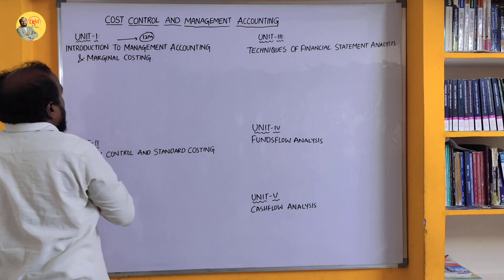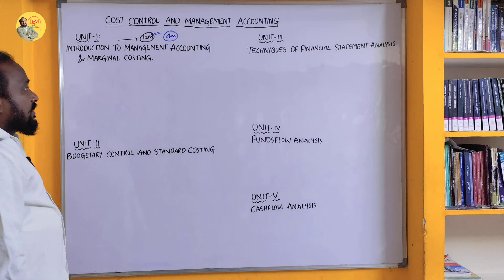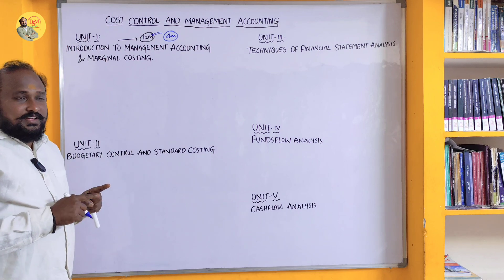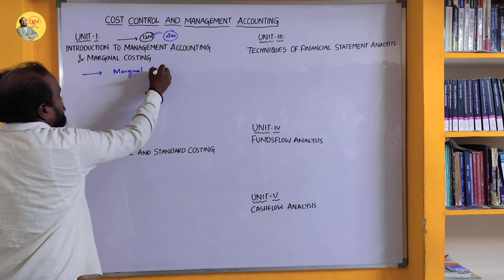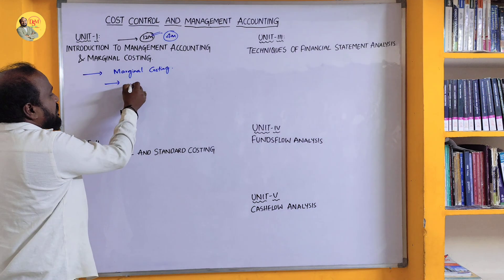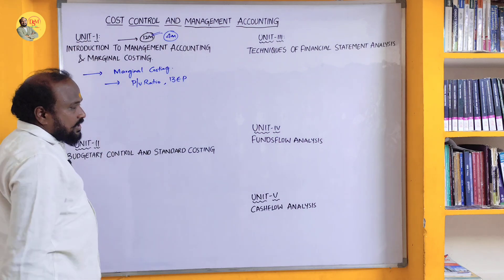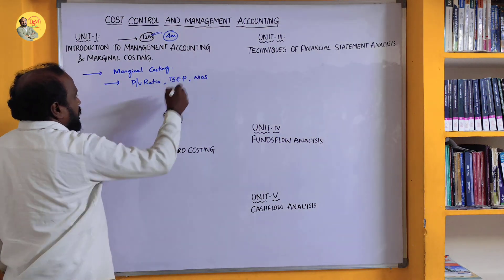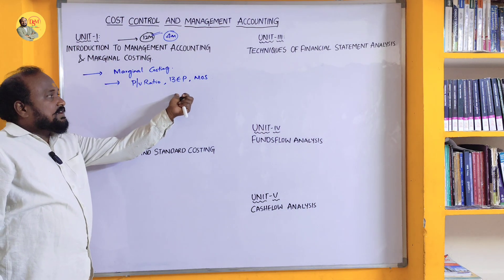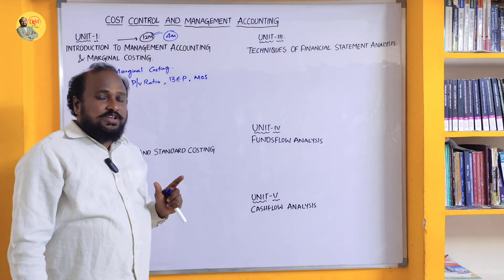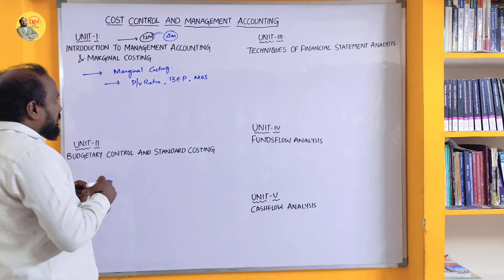From Unit 1 there will be a 12-marks question and also a 4-marks question. The most important topic in this chapter is Marginal Costing. From Marginal Costing, he will ask sums related to P/V ratio (Profit to Volume ratio), BEP (Break-Even Point), and MOS (Margin of Safety). One sum from Marginal Costing is definitely going to come for 12 marks.